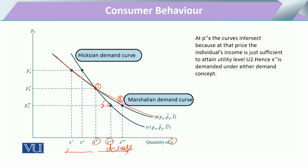In the other case, when the price of X increases, the consumer shifts from point 1 to the left. In the Marshallian demand curve, the consumer moves further left than in the Hicksian. Both curves show a reduction in quantity demanded, but this decrease is more pronounced in the Marshallian demand curve. This shows that in both cases, the Marshallian demand curve is more responsive to any change in price as compared to the Hicksian demand curve.